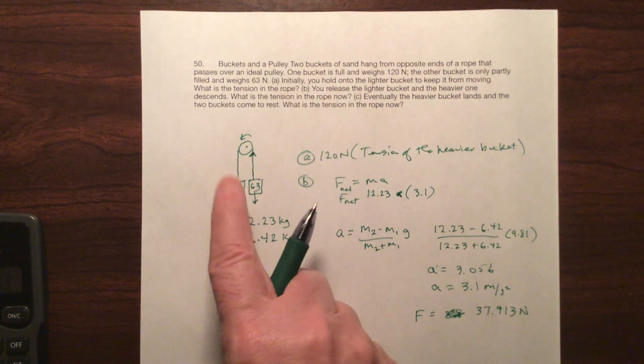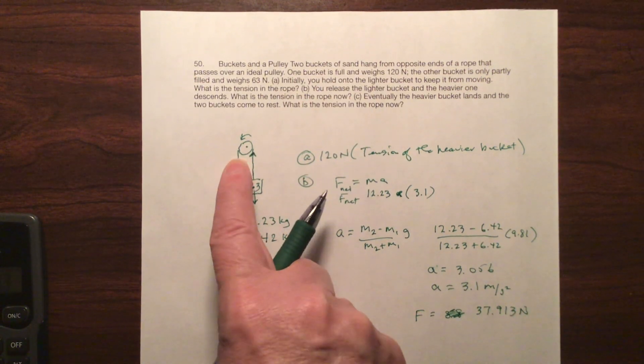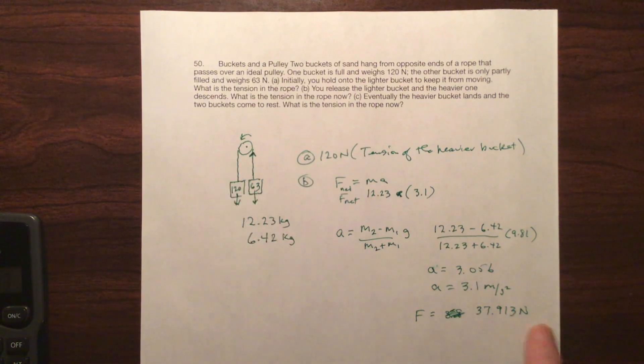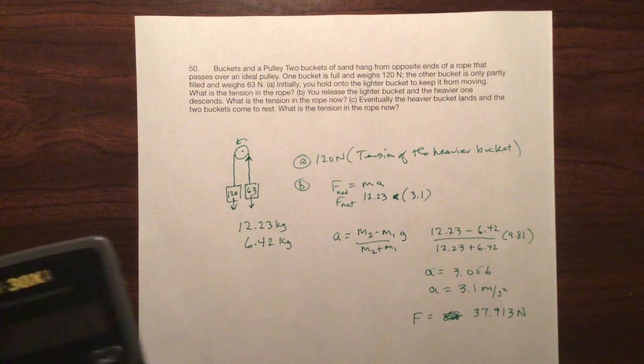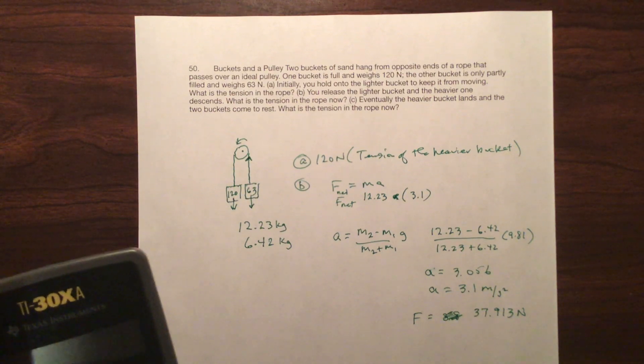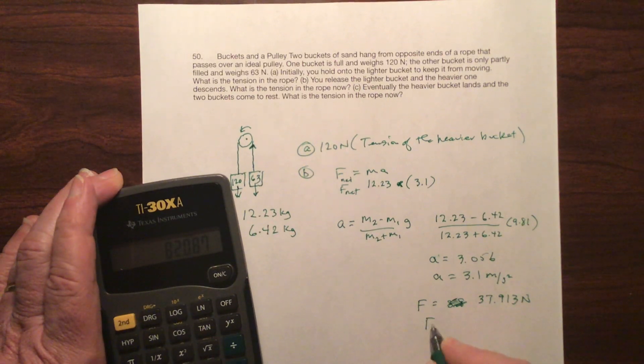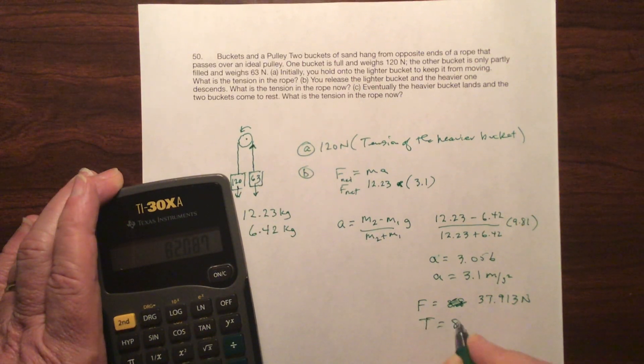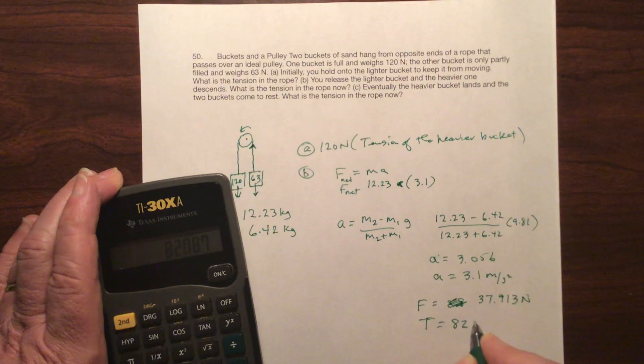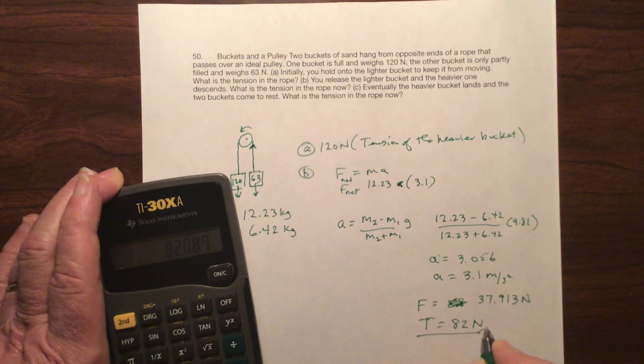120 is the weight. So what's the tension? The tension is the weight minus the force that's making it drop. So this is going to be 120 minus this. And we get the net or the tension in the line is 82 Newtons.